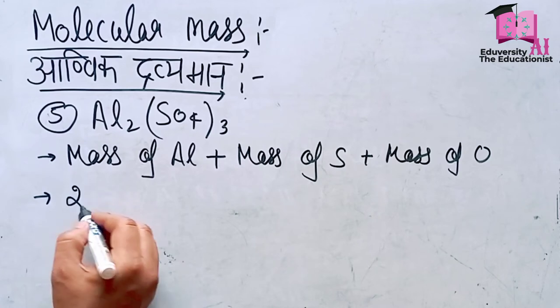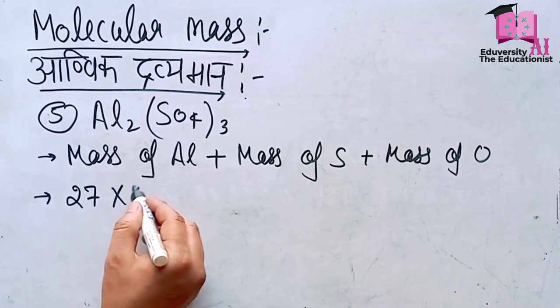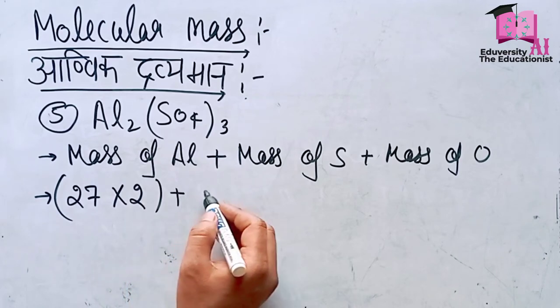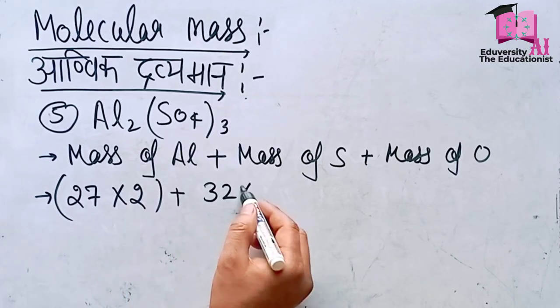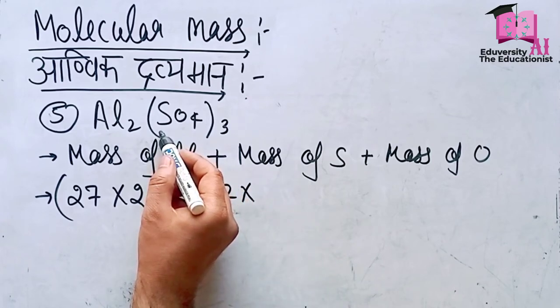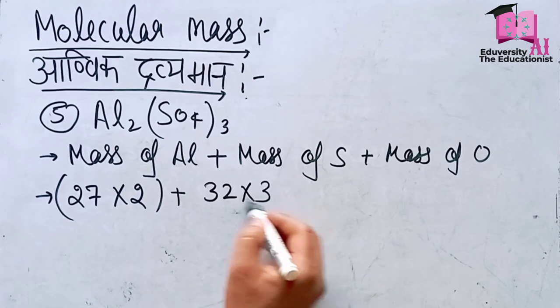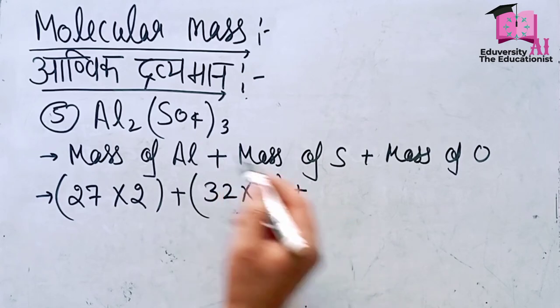27 times 2 for aluminum. Plus sulfur, mass is 32, there are 3 sulfur atoms, so 32 times 3. Plus oxygen, which has 12 atoms total, so 16 times 12.